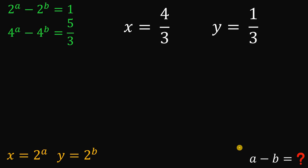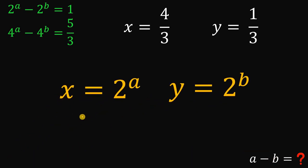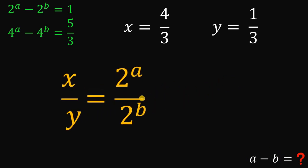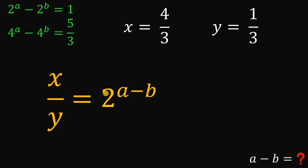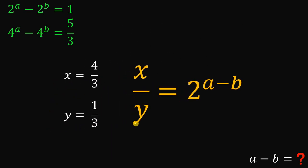Don't forget that our goal is not to find x minus y — we want a minus b. Let's take these two equations. Since our goal is to find the value of a minus b, what we're going to do is divide these two equations. Take note that we have the same base with different exponents and the operation is division, so we can simplify the right-hand side as 2 raised to the power of a minus b. Now we have a minus b, which is what we want to find.